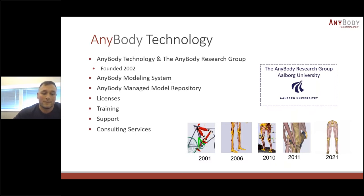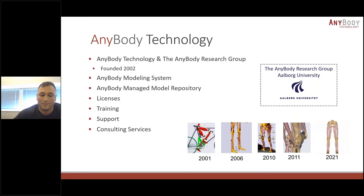Working with AnyBody consists of acquiring a software license. You can participate in online or on-site modeling training workshops, or you can participate in consultancy projects of varying sizes. As you can see in the figures in the slides, our human model has evolved quite a lot over the past years, giving you an idea of how much has happened over the last 20 years.